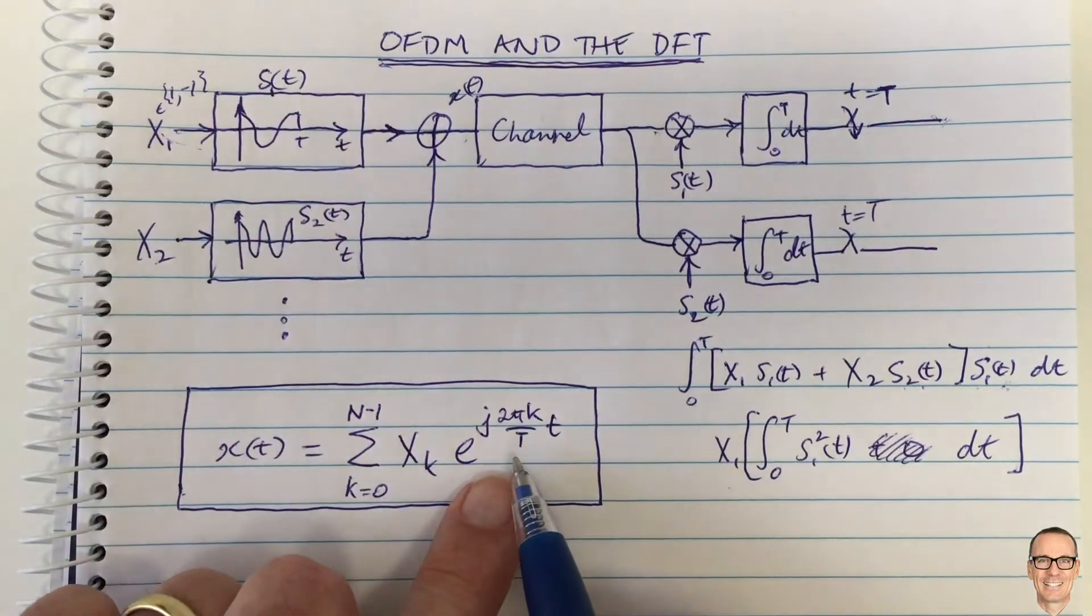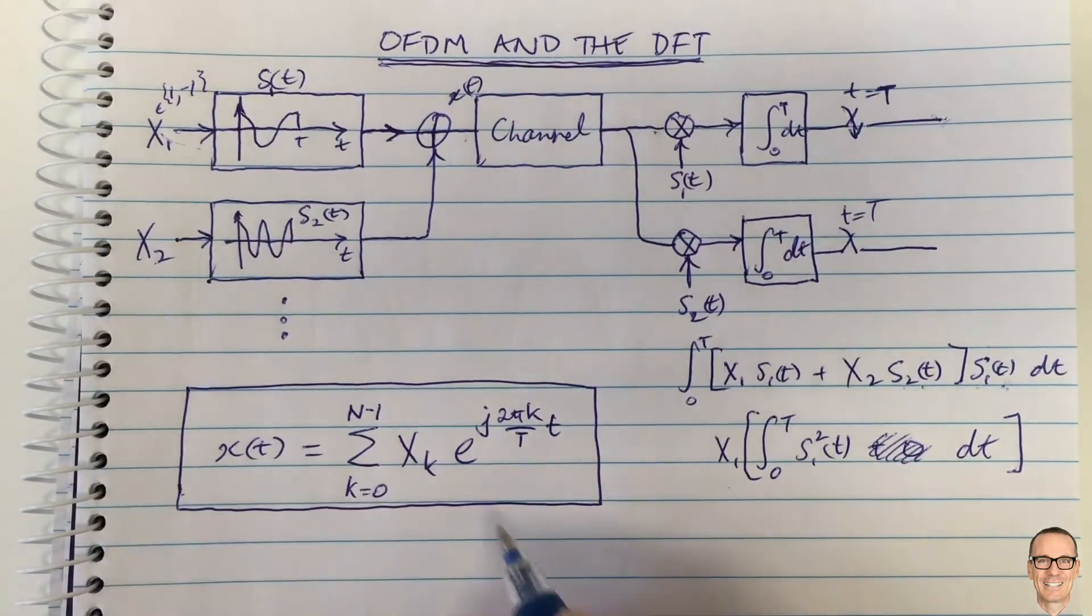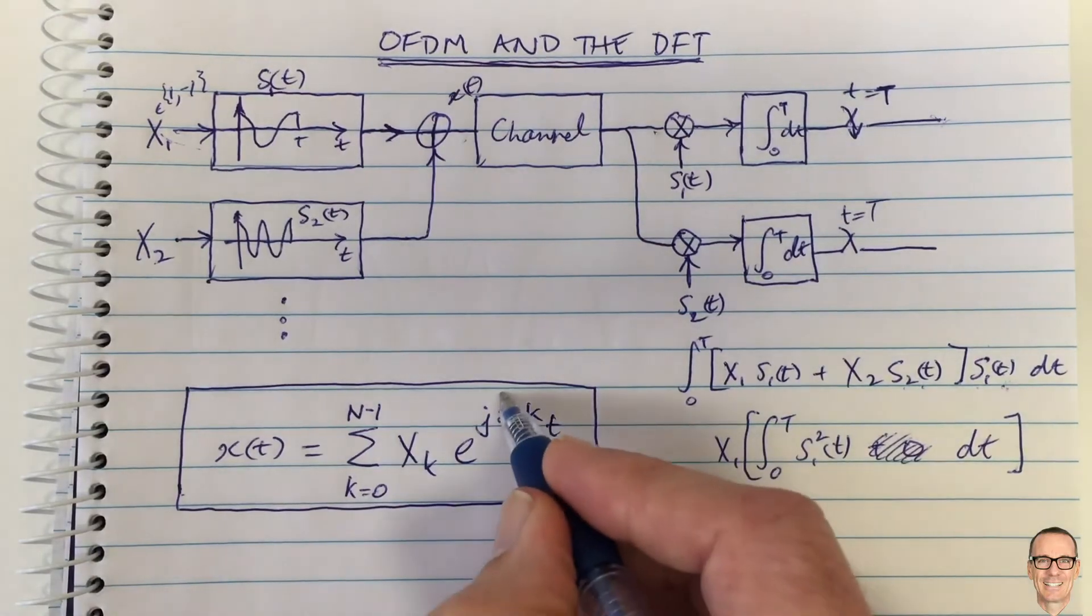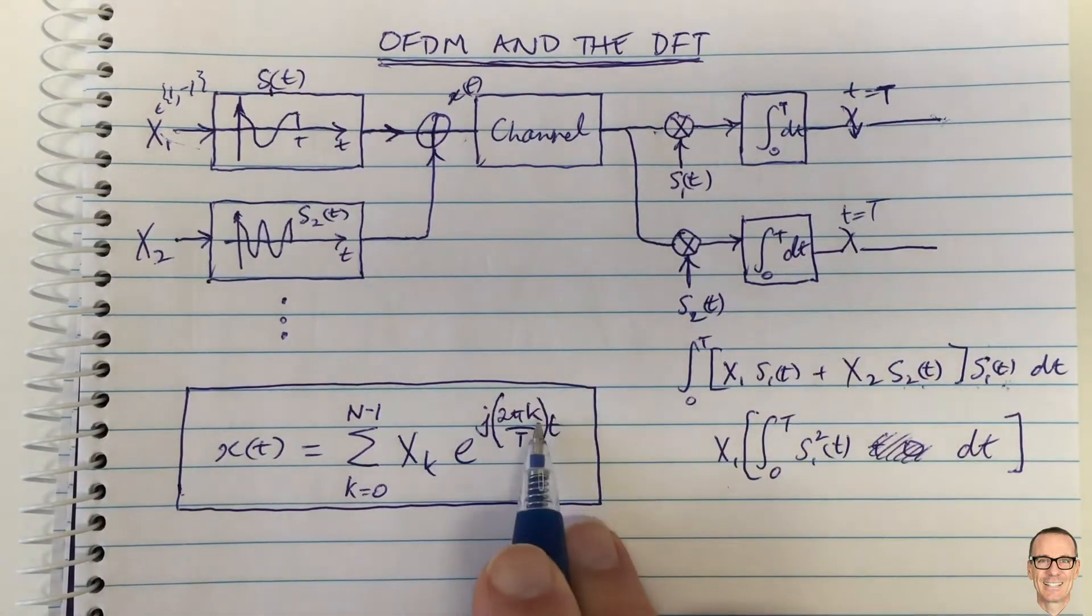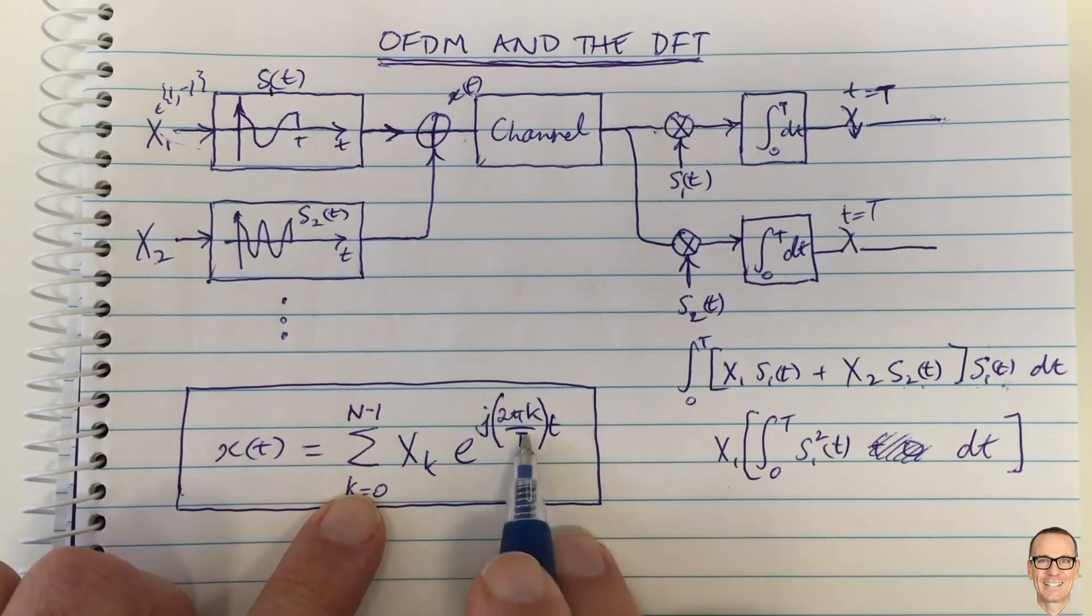By picking that frequency very carefully to be integer multiples—that's the k integer multiples of 1/T—that means that they will be orthogonal. It means that there will be no effect from the other channels on each of the channels that you have an interest in.